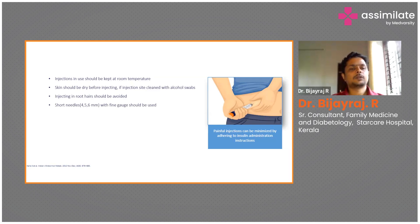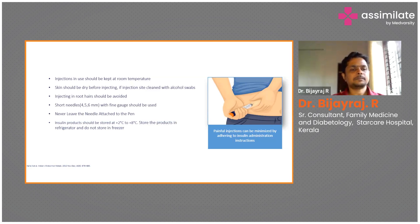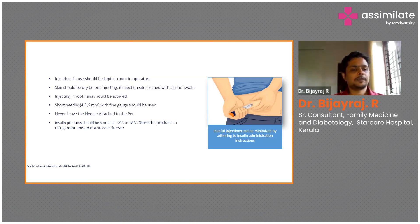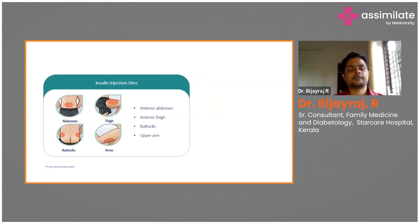Short needles of 4 to 6 mm with fine gauge should be used. Nowadays, 24 to 26 gauge needles are commonly used for insulin administration. Never leave the needle attached to the pen. Insulin products should be stored at between 2 to 8 degrees in the refrigerator — do not store in the freezer. Frozen insulin is frequently of no use; you can't freeze insulin, allow it to form crystals, then thaw it and expect it to be the same. The structure will be different.